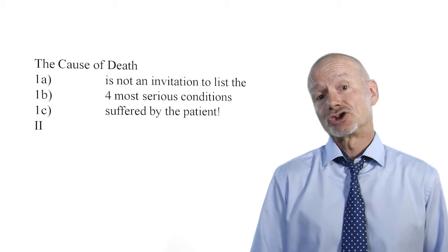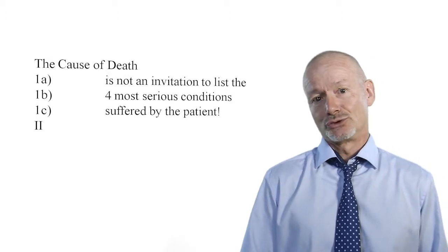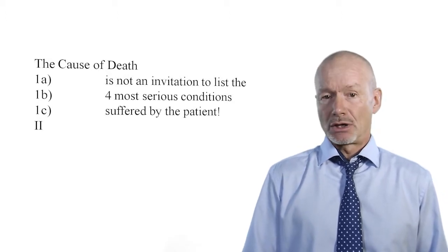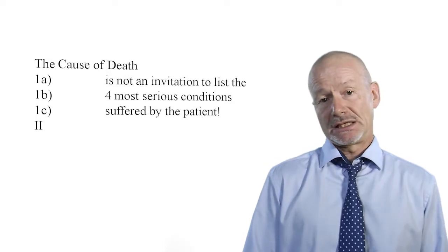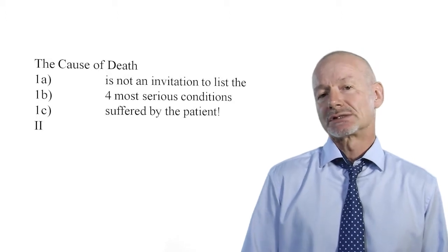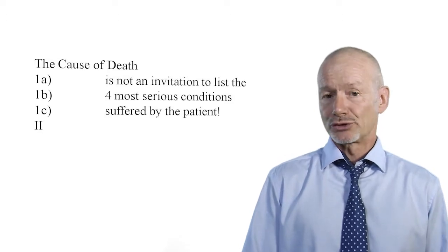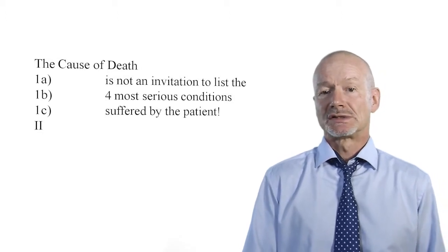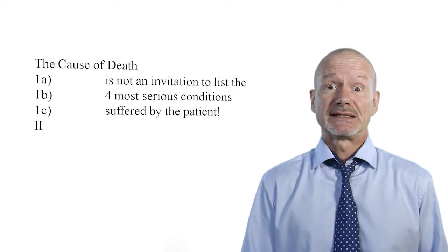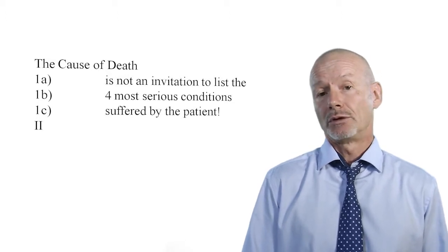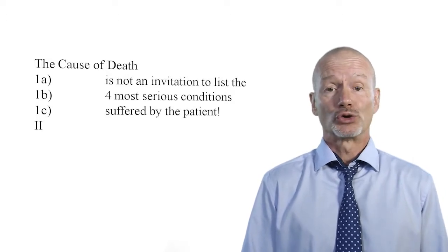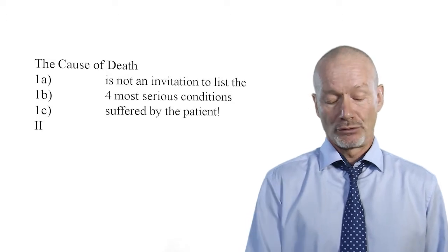This is the structure of the medical certificate cause of death. Part one is divided into A, B and C, and then there's Part two. You don't have to have anything in Part two, but you only mention things there if they contribute to death — those are the also-rans. The main cause of death is going to be in the 1 series. Do remember that A, B and C are causally linked — not just a list of everything happening. If you write something in 1B, you're saying it caused 1A; similarly, 1C caused 1B which caused 1A.